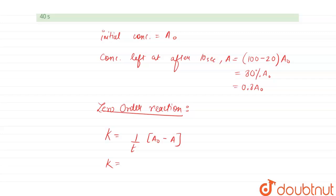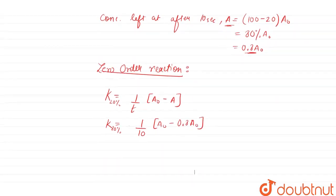So 1 by T, time is given as 10 seconds and this will be A₀ minus 0.8 A₀. This comes out to be 0.02 A₀, that is initial concentration.